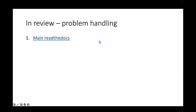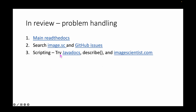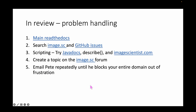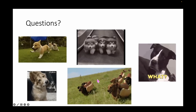In terms of order of operations and resources: first, check the main 'Read the Docs' if you have a problem. Second, search for your problem on image.sc or the GitHub issues — GitHub issues tend to be where things go if they can't be solved on the forum. For scripting, try the Java docs first, use 'describe' on any objects, and check my website for general coding advice. Finally, create a topic on the image.sc forum — but do due diligence first, since there are already 3,400-plus topics on QPath and your question may already have been asked.